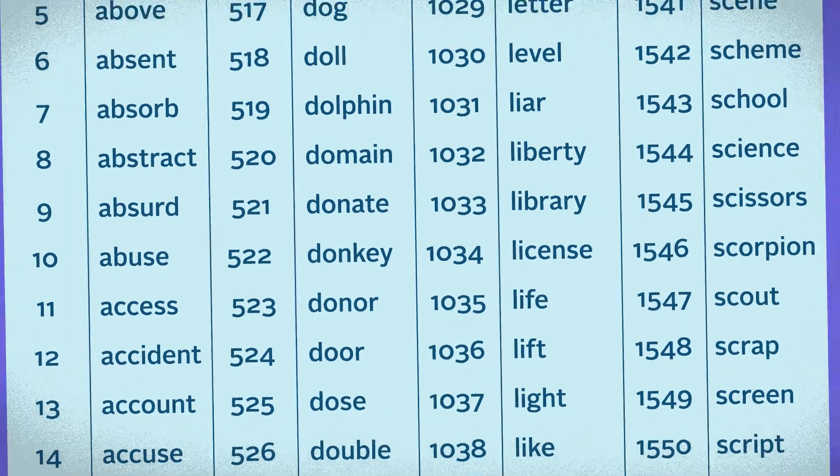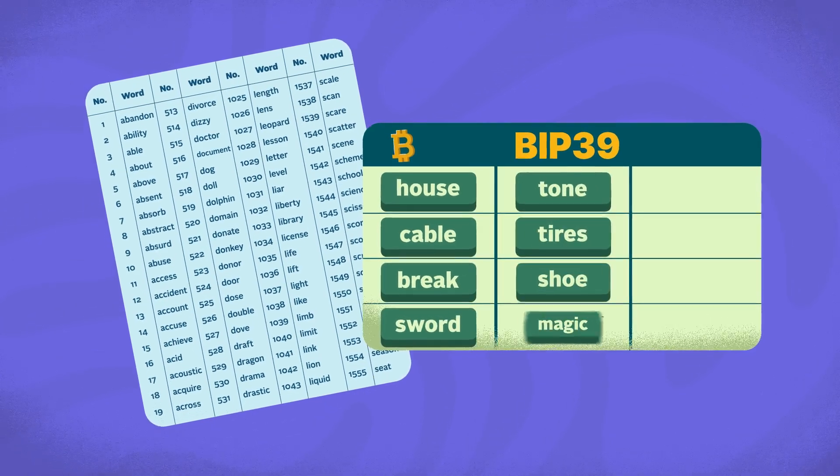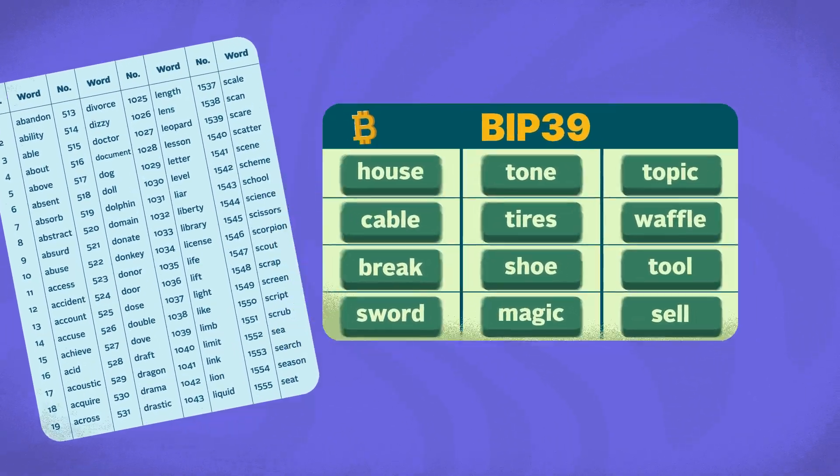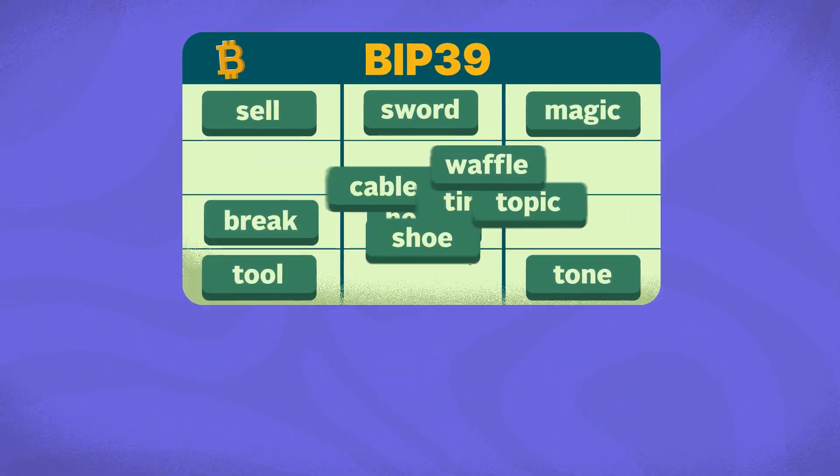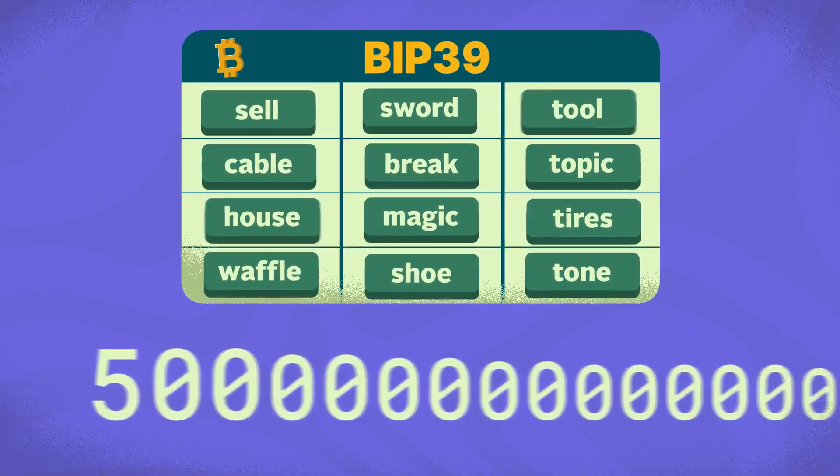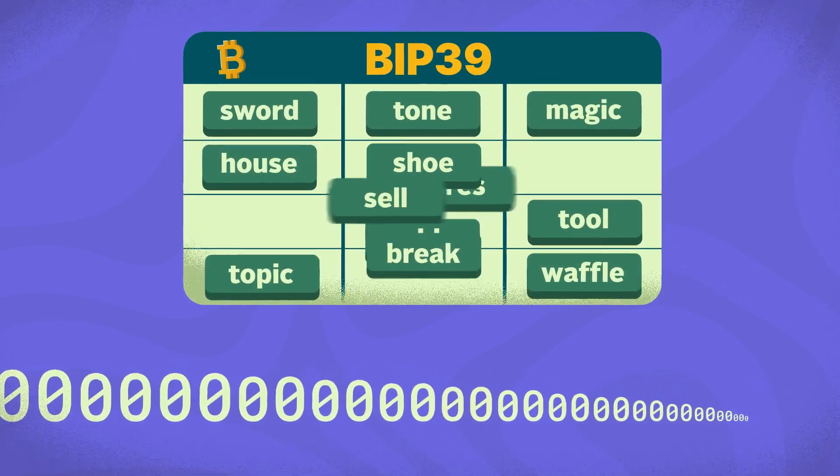Now, 2048 words might not sound like a lot, but because each seed phrase contains at least 12 words in a particular order, there are 2048 to the power of 12 or 5 duodecillion possible seed phrase combinations. That's 5 followed by 39 zeros.